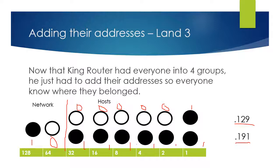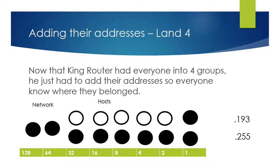Now let's look at LAN 4. We separate our protectors from our villagers — our network from our hosts. The protectors are 1 and 1. Adding 128 + 64 + 1 gives us 193 for the starting address, and 128 + 64 + 32 + 16 + 8 + 4 + 2 + 1 equals 255 for the end.